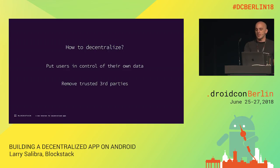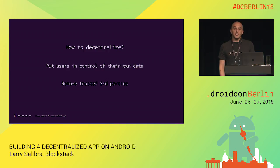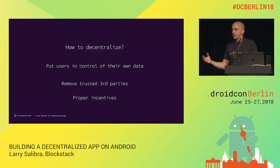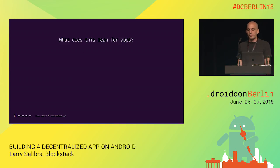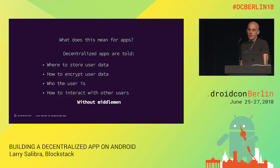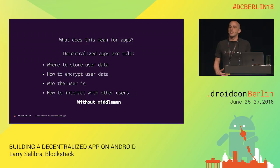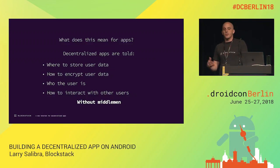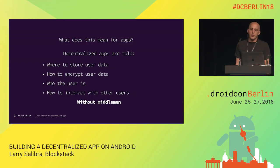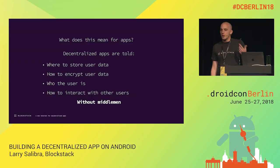Decentralization means putting users in control of their data, removing trusted third parties — people not party to the relationship or transaction the user is conducting — and creating a proper set of incentives that encourage people to break free of the network effects of the centralized internet and either build or use new decentralized apps. When you log into a decentralized app, your app is told where to store user data in the user's private cloud storage hub, how to encrypt it so only the user can decrypt it, who the user is, and how to interact with others without any middlemen.